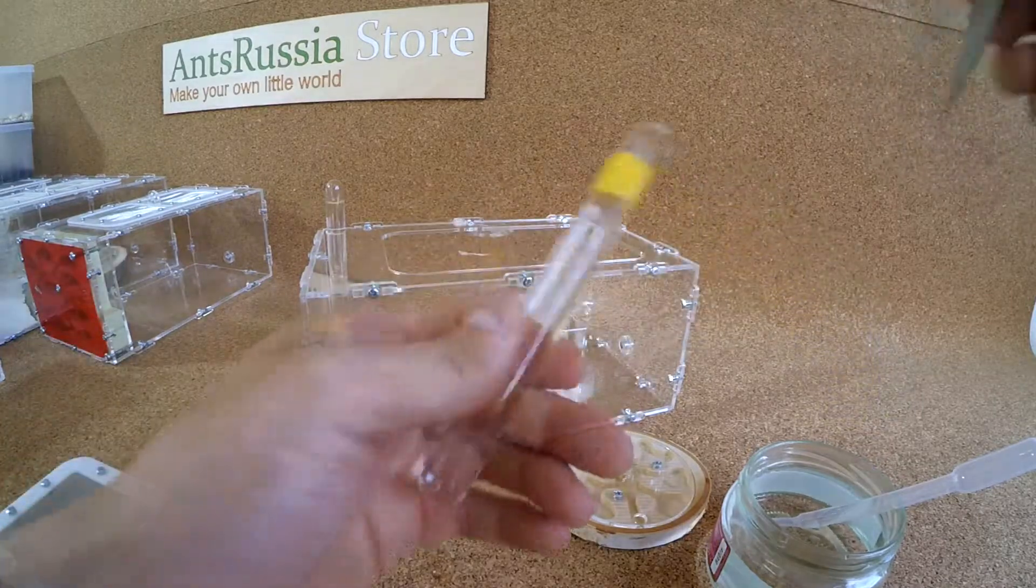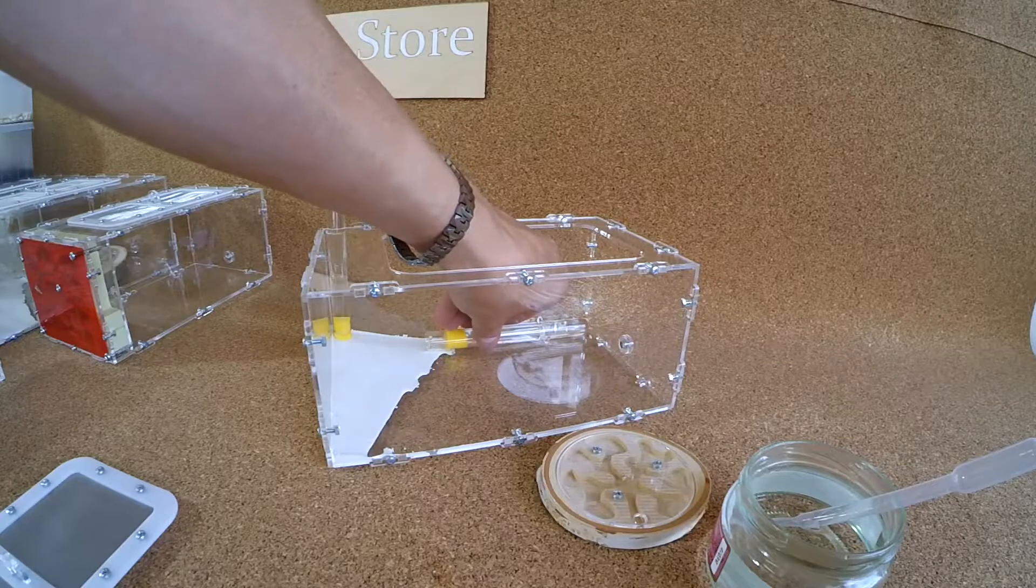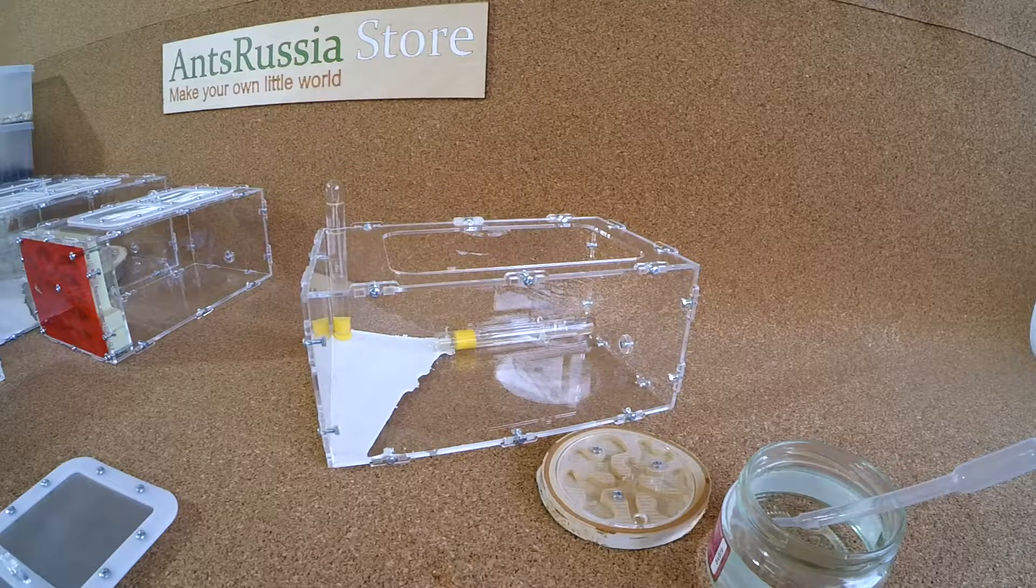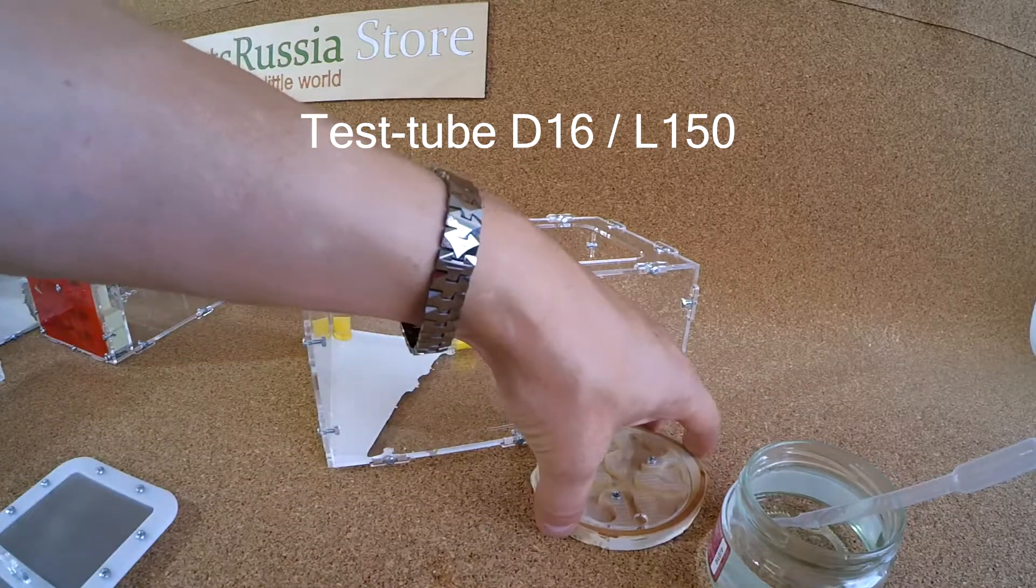A drinking bowl is an integral part of our formicariums. For ease of use it is horizontally located and made of 16 mm diameter and 150 mm length test tube.